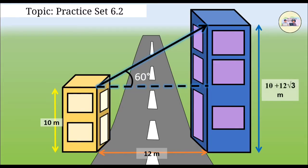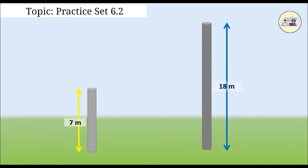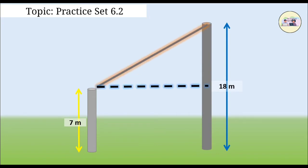Question 4. Two poles of heights 18 meters and 7 meters are erected on the ground. The length of the wire fastened at their tops is 22 meters. Find the angle made by the wire with the horizontal.